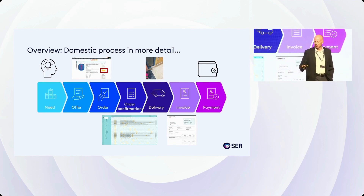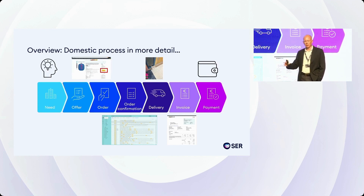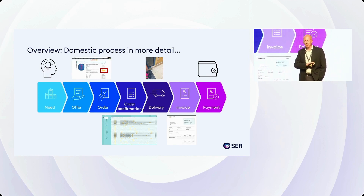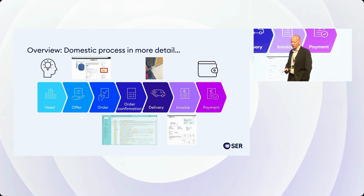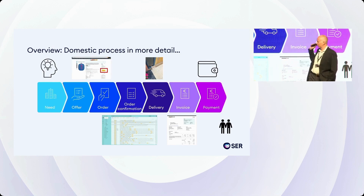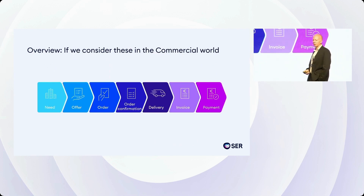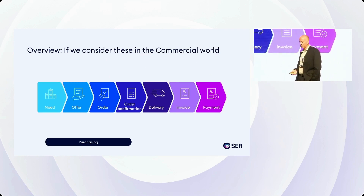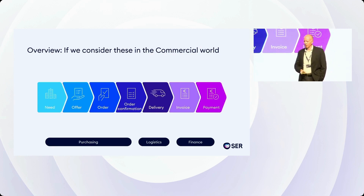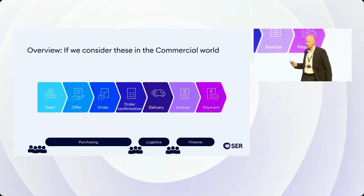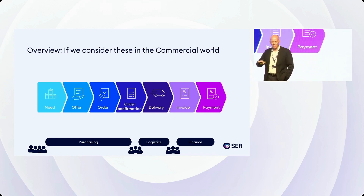Now that's the domestic view. What about the commercial world where everything will be much more complex? 1.2 million invoices a year, 20,000 different suppliers to manage — massive, massive headache unless you stay on top of things. Going back to our familiar schematic, we've got three main areas of business: the purchasing team, the logistics team, and finance. These are typically groups of many people, and there may be overlap depending upon the size of the organization.